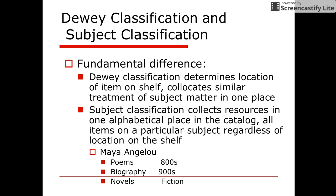Literature, for example, will be in the 800s and pure science in the 500s. Subject classification is a more refined classification and it deals with the actual content of the book in a very specific way.